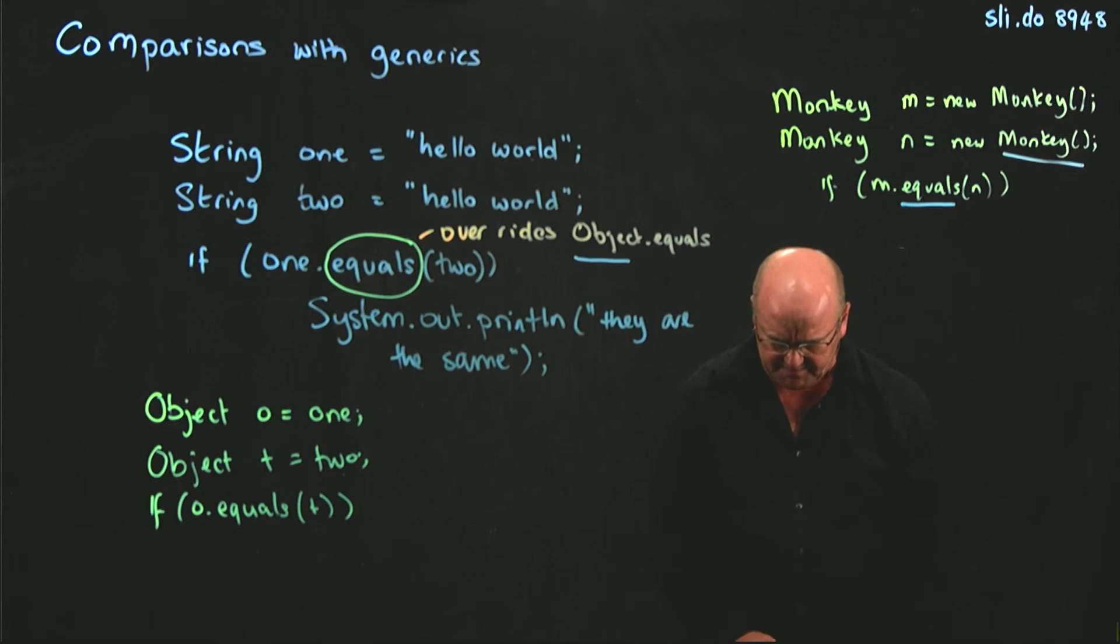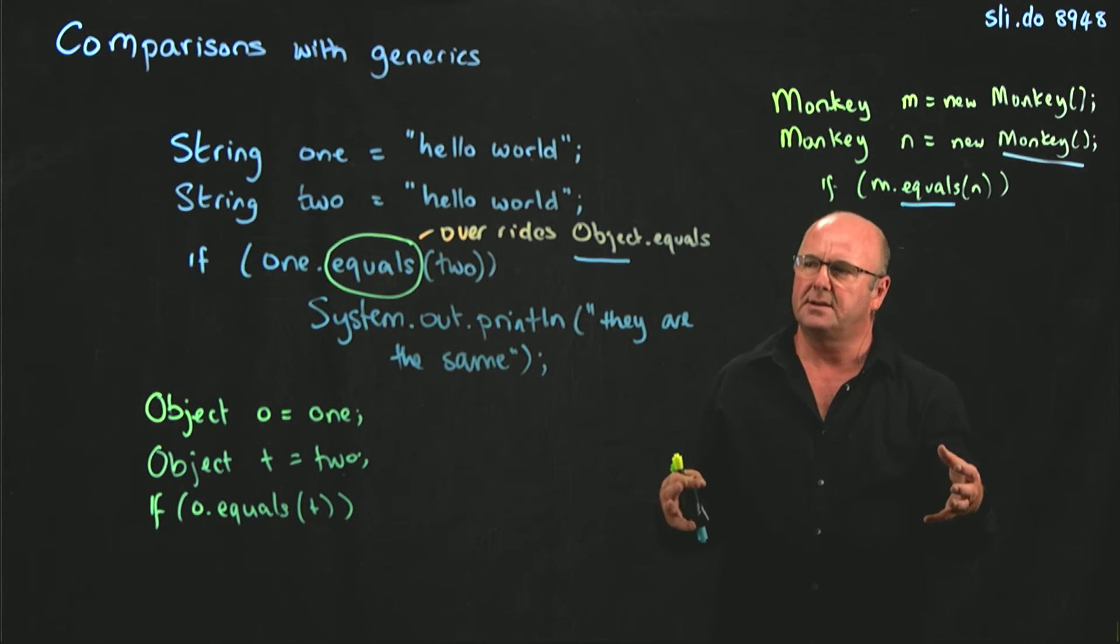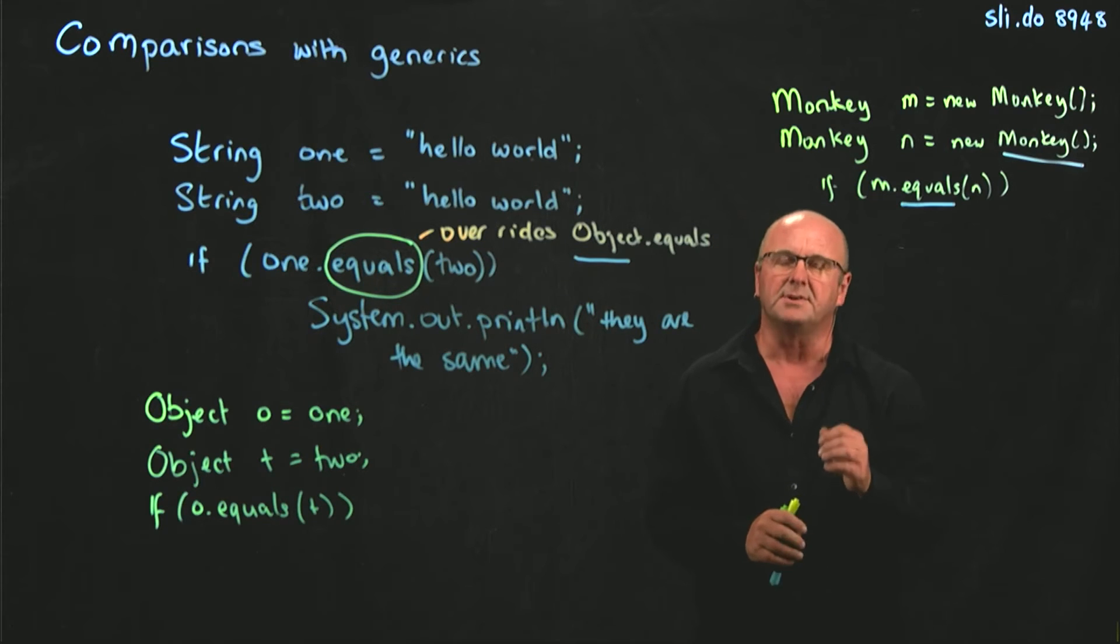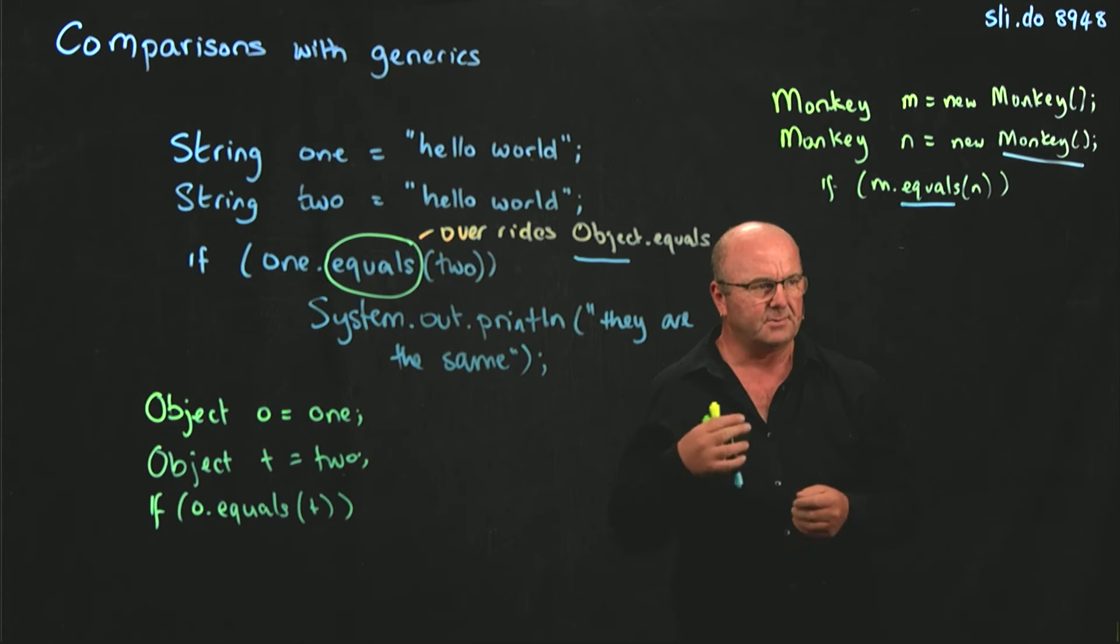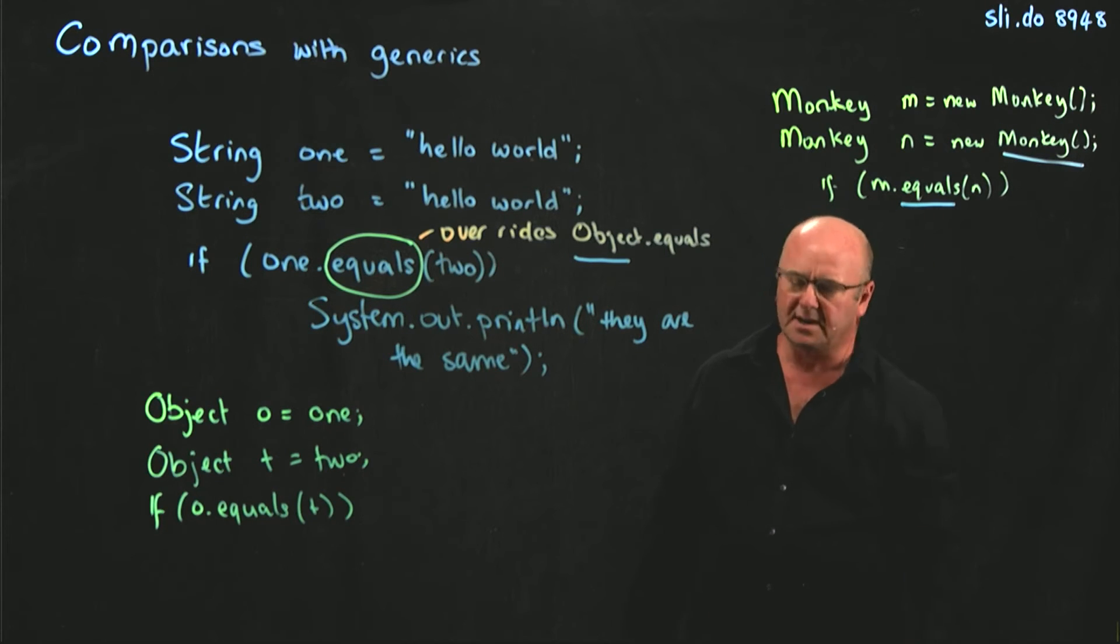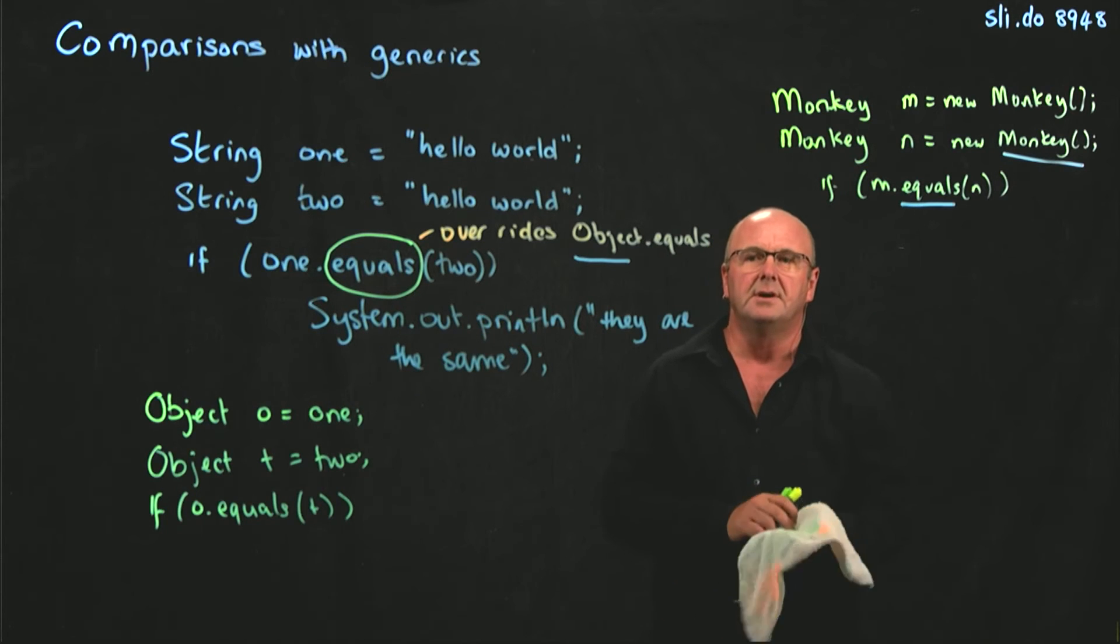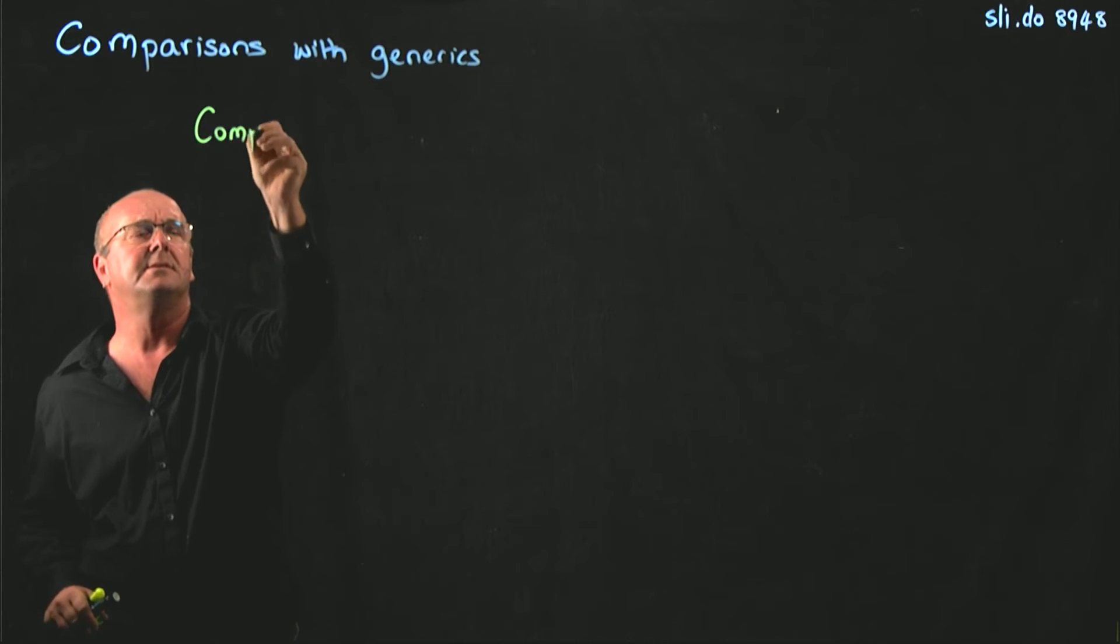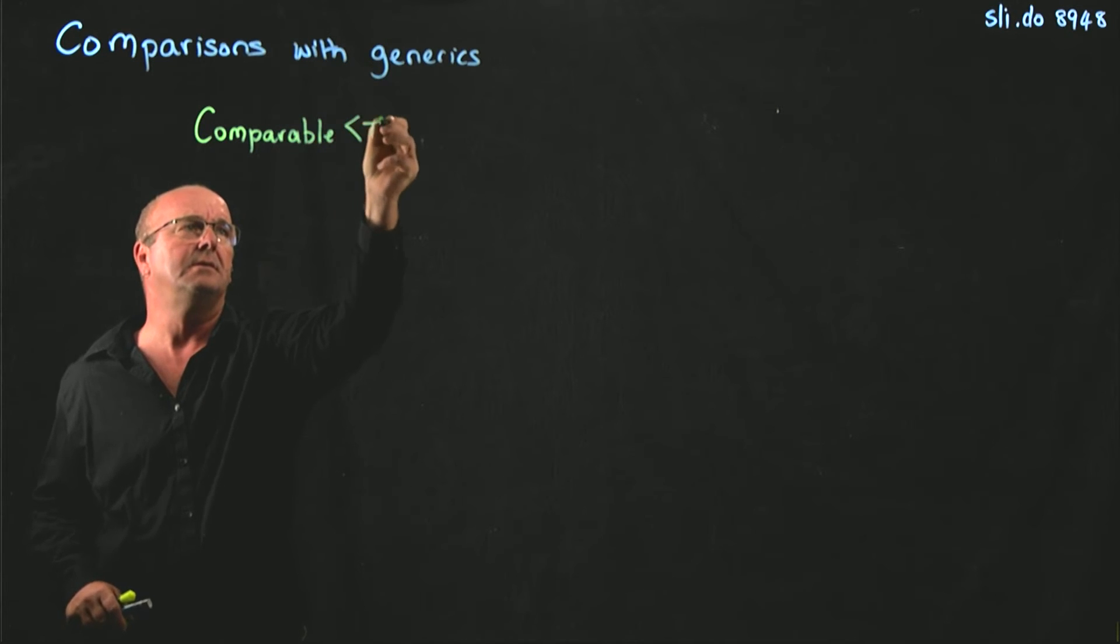And so we want to have a mechanism that requires that we've overridden the equals method or the method that we're going to use. And since we're going to do that, we can actually extend a little bit that comparison. Because we rarely, occasionally we want to know whether two things are equal. We often want to know whether one thing is bigger than the other. So in addition to the equals that's in the object class, there's another way that we can make people tell us whether two things are equal. And it's called the comparable interface.